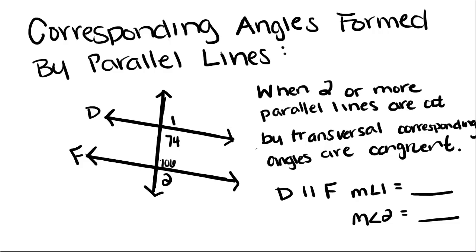Today we're going to talk about corresponding angles formed by parallel lines. These angles are going to help us solve some triangle problems later on. When you have two or more parallel lines — denoted with these little arrows — that are cut by a transversal, which we're going to call line T, corresponding angles are congruent.